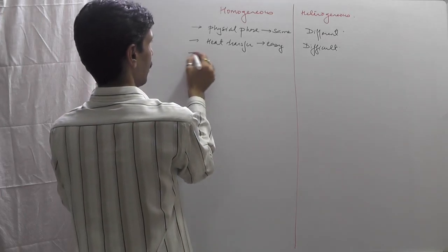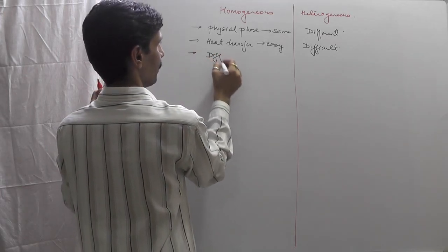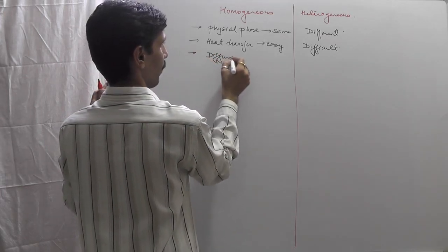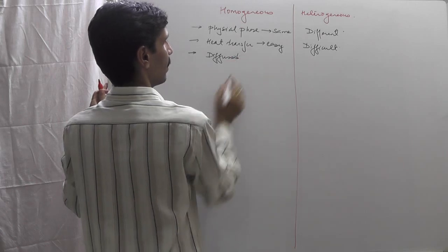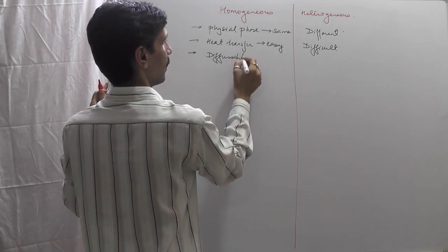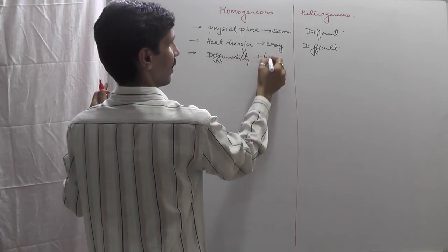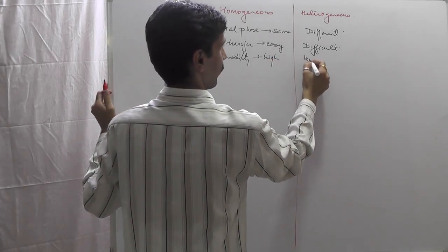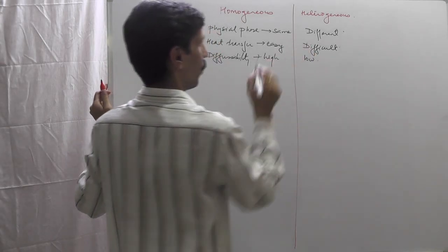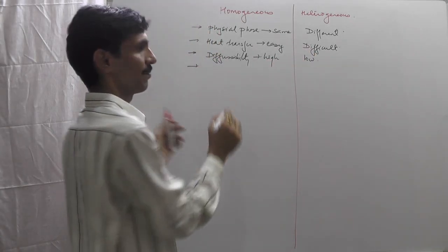The third point is diffusibility — the ability to penetrate inside a substrate. In homogeneous catalysis, diffusibility is high, whereas in heterogeneous catalysis it is comparatively low.